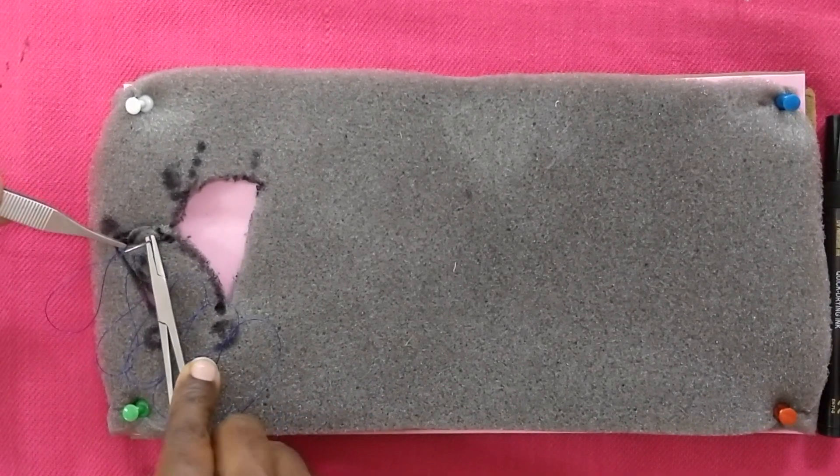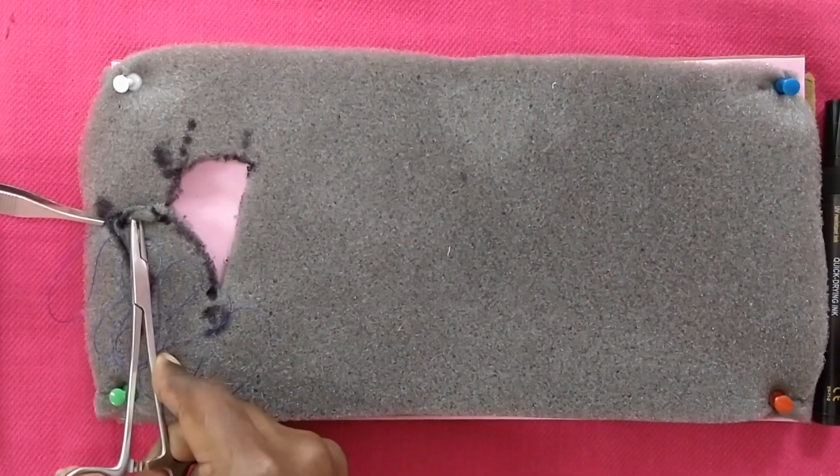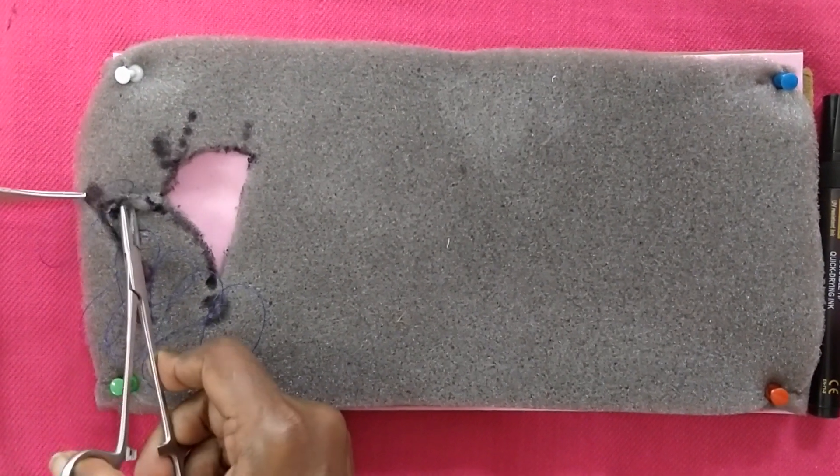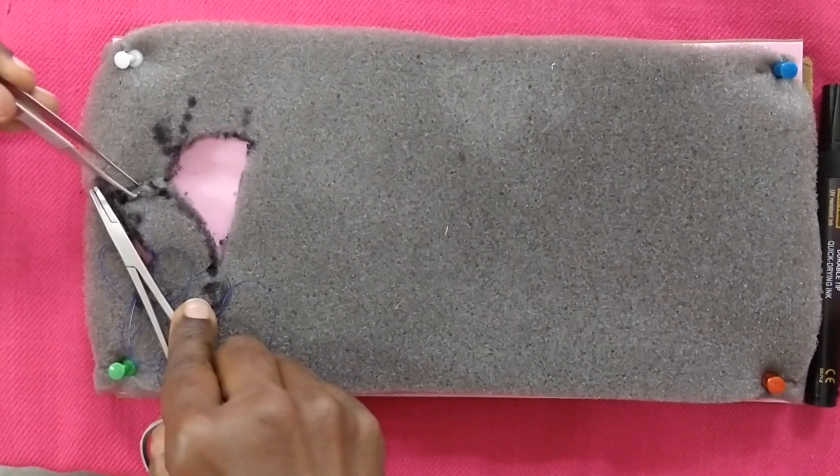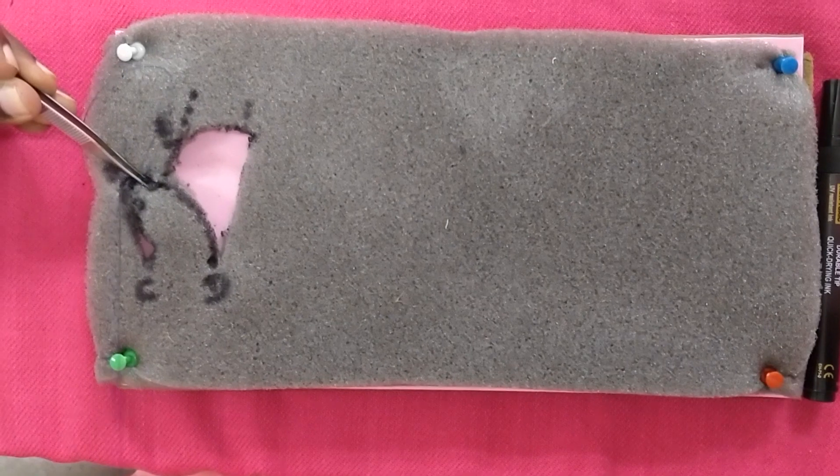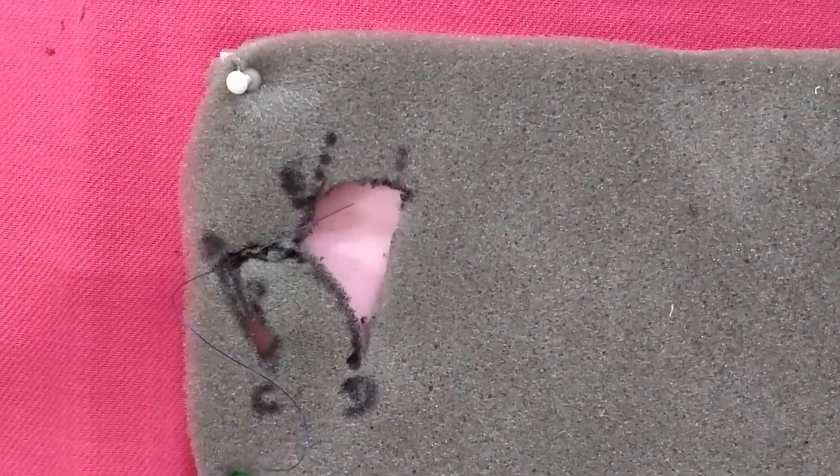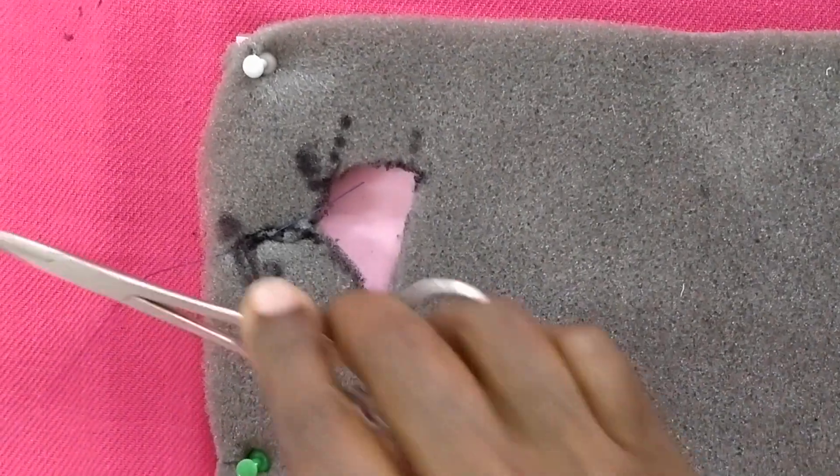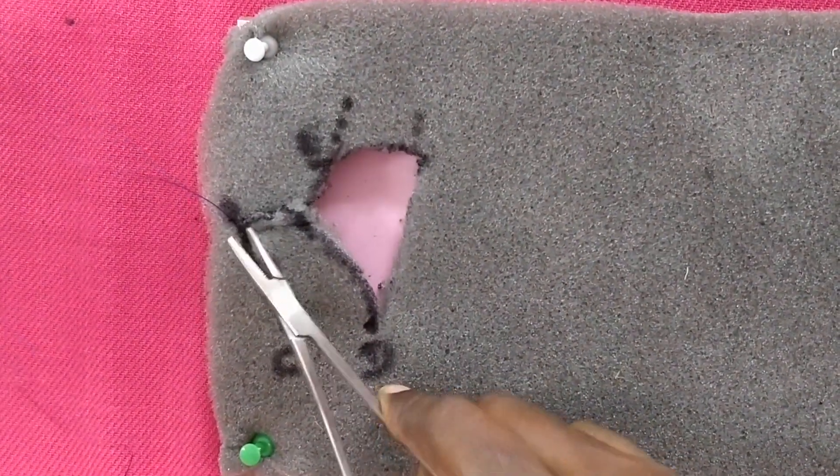The point E is now sutured to the point A. It is important to avoid any tension on the flap. As I was talking to you about the dog ear that forms on the side A, C, because of discrepancy in size. This point of dog ear has been dealt with in detail in the video on transposition flaps.